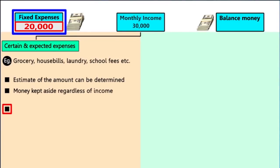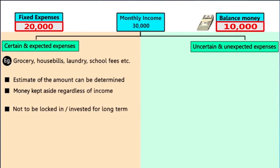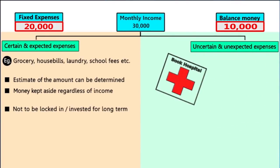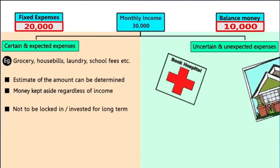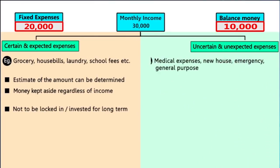She has to keep this money aside regardless of the variation in income — this money should be handy, so it is advisable to not lock in or invest this amount anywhere long term. As for the remaining 10,000, she would save this for unforeseen circumstances or unexpected expenses like medical expenses, or even start saving for something big like buying a new house.